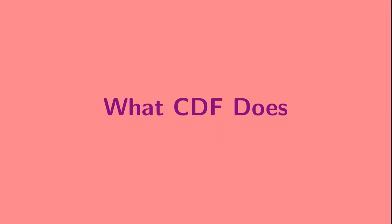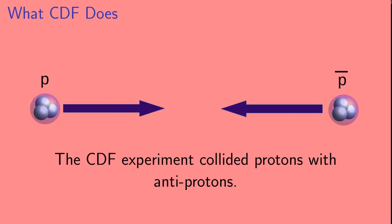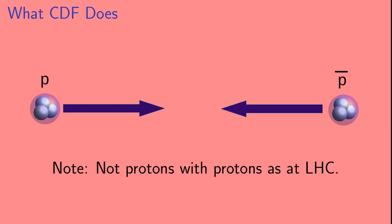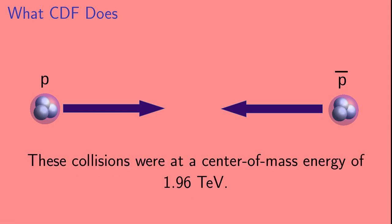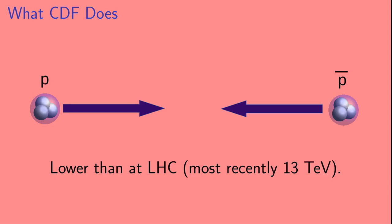Okay, with that short description of the standard model out of the way, let's talk about what CDF does, or perhaps more appropriately, did. The CDF experiment collided protons with anti-protons. So here we're visualizing these collisions occurring on the horizontal axis in this picture. Now, this is different from what LHC does. There, they collide protons with other protons. The collisions at CDF were at a center of mass energy of 1.96 TeV. This is quite a lot lower than the energy of the Large Hadron Collider, which most recently ran at 13 TeV.